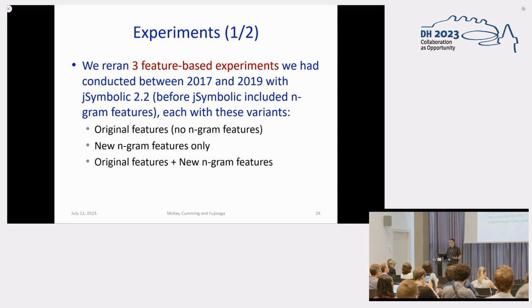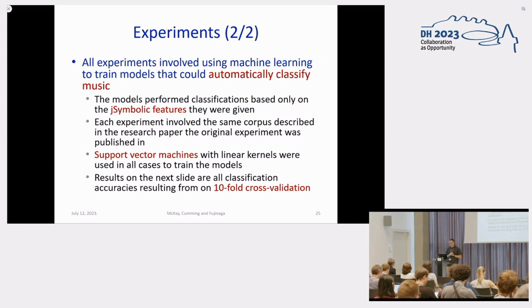All right, so now that we know about the basic methodology that's being used, we decided to test it out. So we took three experiments that we'd previously published separately between 2017 and 2019, where we'd used Jsymbolic 2.2 features, which is Jsymbolic features without n-grams, that don't use n-grams at all. So we took the results of those experiments, and then we ran them again. We did one version where we had only the n-gram features being used, and another version where we had the n-gram features combined with the original features to see what kinds of performance we had. When we did this, the only input to everything we were doing was Jsymbolic features, and we used those features to train models using machine learning. In particular, we used support vector machines, and then we classified the music in various different ways. These are all classification accuracies resulting from tenfold cross-validation.